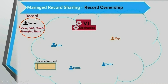By default, this ownership is assigned to the creating user by Salesforce without involvement of any user or Apex code — Salesforce internally manages this. For example, on the Service Request object, if tech1 creates a record, he becomes the owner and gets full access: view, edit, delete, transfer, and share. This ownership is only given to tech1 because he created that record, not to other users.